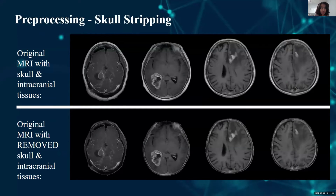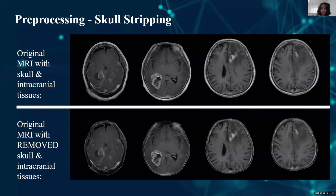As shown, the skull and intracranial tissues — the bright border surrounding the brain — are removed in all four results. In the skull-stripped image, the brightest things remaining in the MRI are the tumor itself. Removing the border helps with detection and makes the QCNN and MMR algorithm more efficient in processing and spotting it.